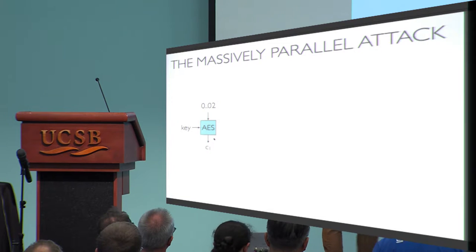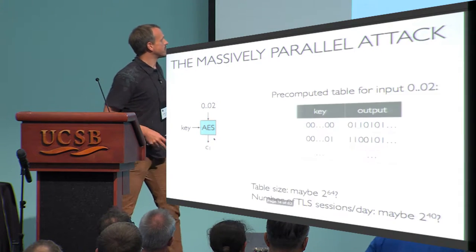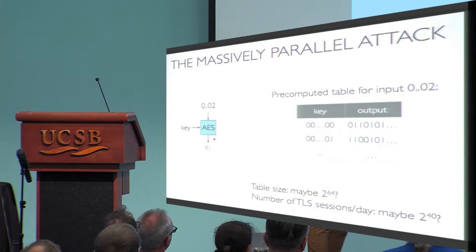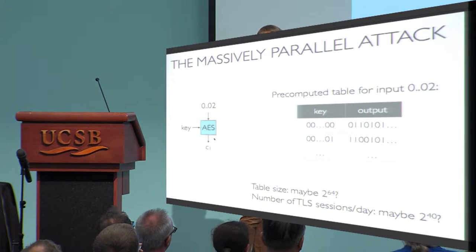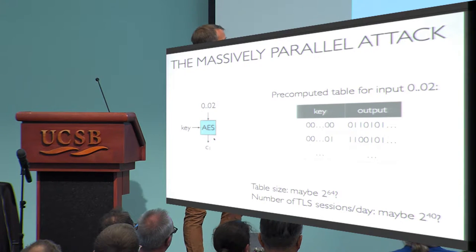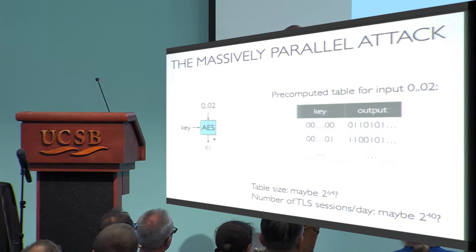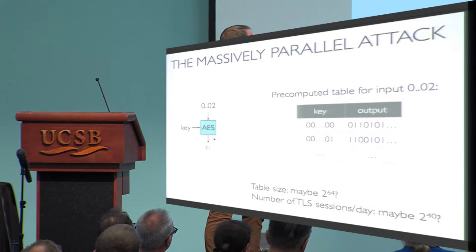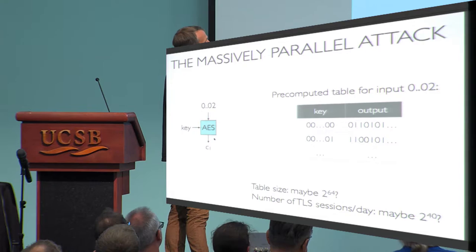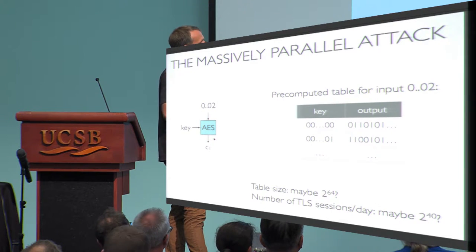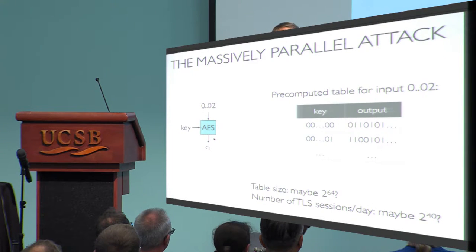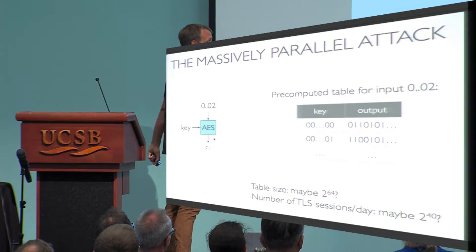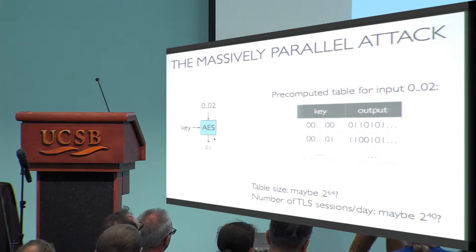When we attack a connection, we can uncompute the known plaintext and get the output that must have been used to encrypt it. If you are a very powerful entity with a huge storage and computation center — maybe in the desert of Utah — you could compute a huge table for this input, containing a large selection of keys and the corresponding AES output. Once you see a connection, you predict the header, look up the table, and may recover the key.